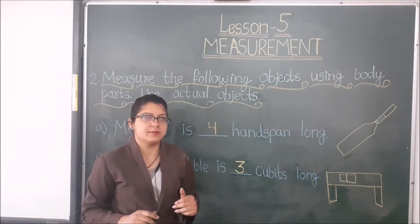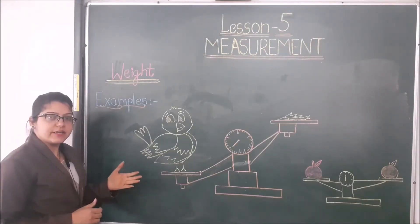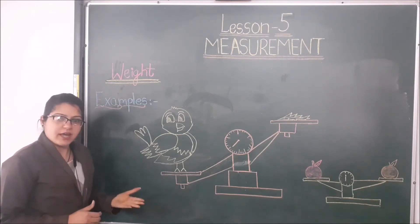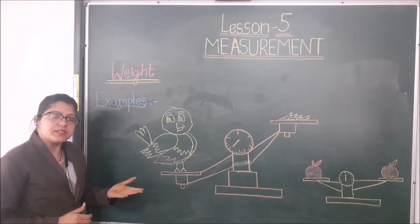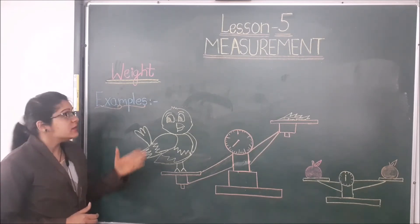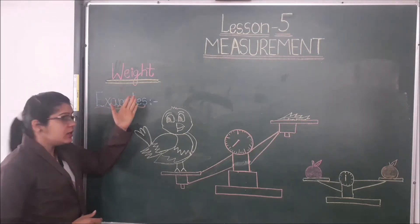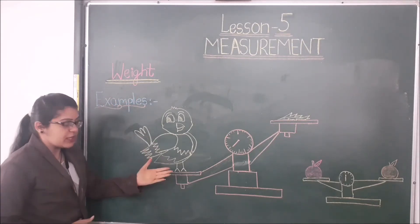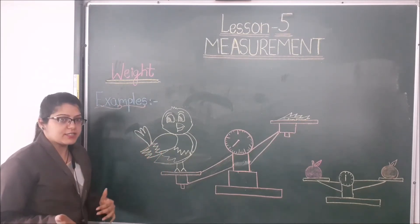Now students, let's see the next point. Our next point is weight. We can measure everything according to their weight. This is also a standard unit of measurement. Here I have made some examples to explain which thing is heavy and which thing is light.